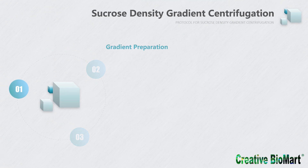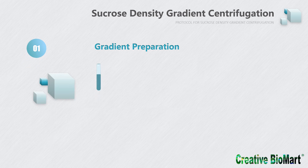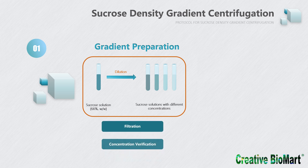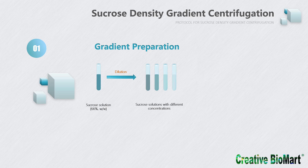Gradient preparation is a key step in sucrose density gradient centrifugation. A 66% sucrose solution has low water content and can effectively inhibit bacterial growth, so it can be stored indefinitely at 4°C. Therefore, 66% sucrose solution is prepared first and then diluted to other desired concentrations. To obtain better experimental results, the sucrose solution needs to be filtered and a refractometer is used to verify the sucrose concentration. When using sucrose density gradient centrifugation to separate protein complexes, protease inhibitors need to be added, along with other compounds depending on the enzymatic activities that need to be inhibited or preserved.